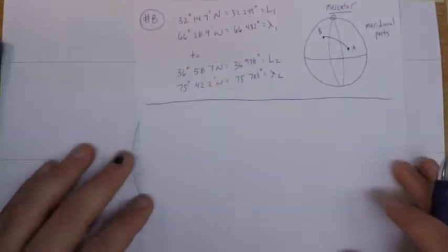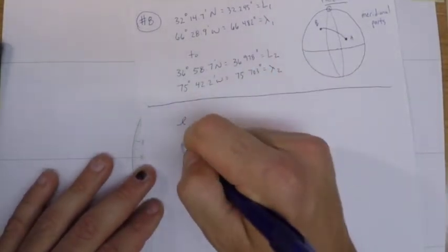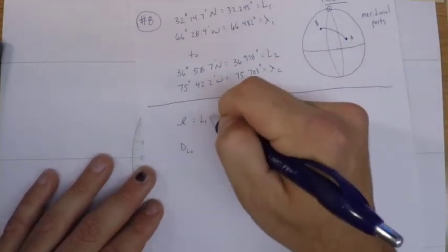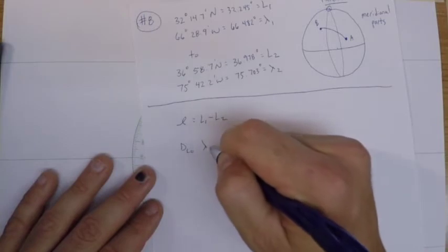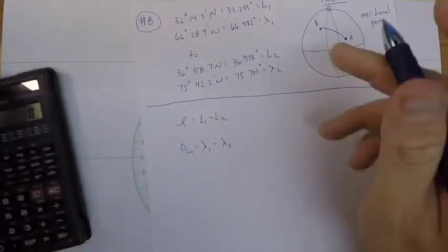All right, cool. And then what I can do is I can calculate my L and my difference in longitude. So L is just going to be the difference between L1 and L2. Difference in longitude is going to be the difference between longitude 1 and longitude 2 in absolute value, it doesn't really matter.